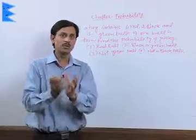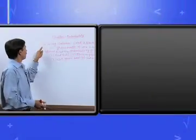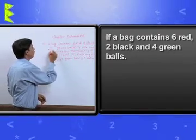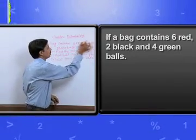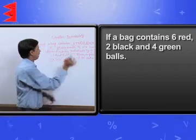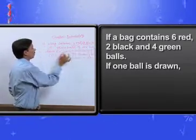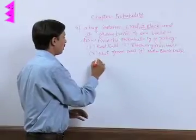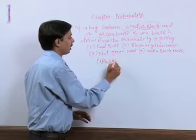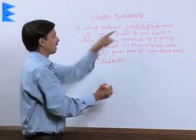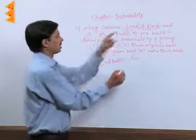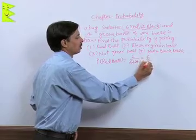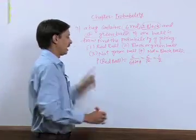Now let's look at bag-of-balls problems. A bag contains 6 red, 2 black, and 4 green balls. If one ball is drawn, find the probability in the first case that the ball is red. There are 6 red balls and total balls are 6 plus 2 plus 4 equals 12, so the probability is 6 upon 12, which is 1 by 2.